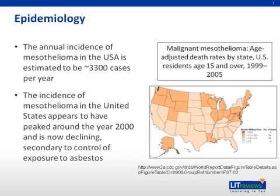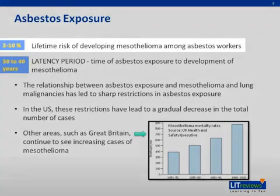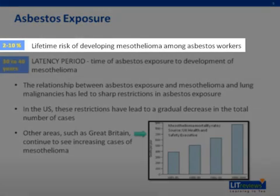Smoking is not a risk factor for mesothelioma. However, asbestos exposure in association with smoking does increase the risk for lung cancer and pleural and peritoneal mesothelioma. Most cases of mesothelioma — about 50 to 80% — occur in patients who were exposed to asbestos, and such individuals have a lifetime risk of about 2 to 10% for this otherwise uncommon malignancy.